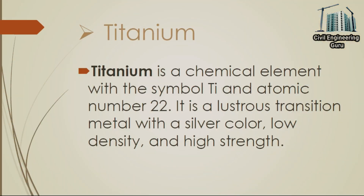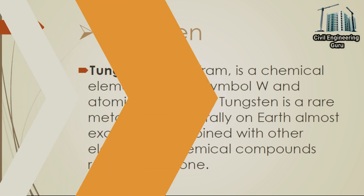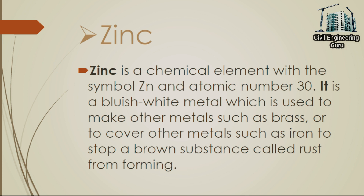Titanium is a chemical element with the symbol Ti and atomic number 22. It is a lustrous transition metal with a silver color, low density, and high strength. Tungsten, or wolfram, is a chemical element with the symbol W and atomic number 74 — a rare metal found naturally on Earth almost exclusively combined with other elements in chemical compounds. Zinc is a chemical element with the symbol Zn and atomic number 30. It is a bluish-white metal used to make other metals such as brass, or to cover other metals such as iron to stop rust from forming.